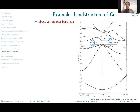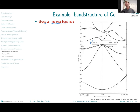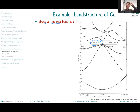We therefore distinguish between direct and indirect semiconductors. Indirect semiconductors have an indirect band gap smaller than the direct band gap, where the direct band gap is the smallest energy difference between valence and conduction band at the same k-vector.